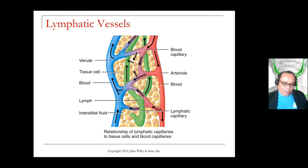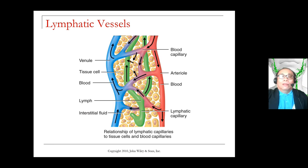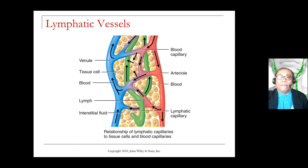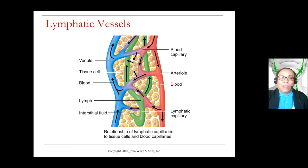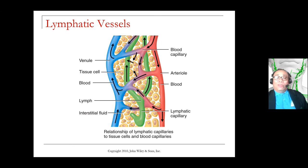Now let's understand how lymph is formed. Looking at this diagram, let's divide it into two parts. The one with red is the arterial side — blood comes from the heart. The one with blue is on the venous side, meaning the blood is returning back to the heart. The green ones are the lymphatic vessels. So, where is lymph here in this diagram? As blood flows through the arteries, it reaches the smallest blood vessel — the capillary bed.